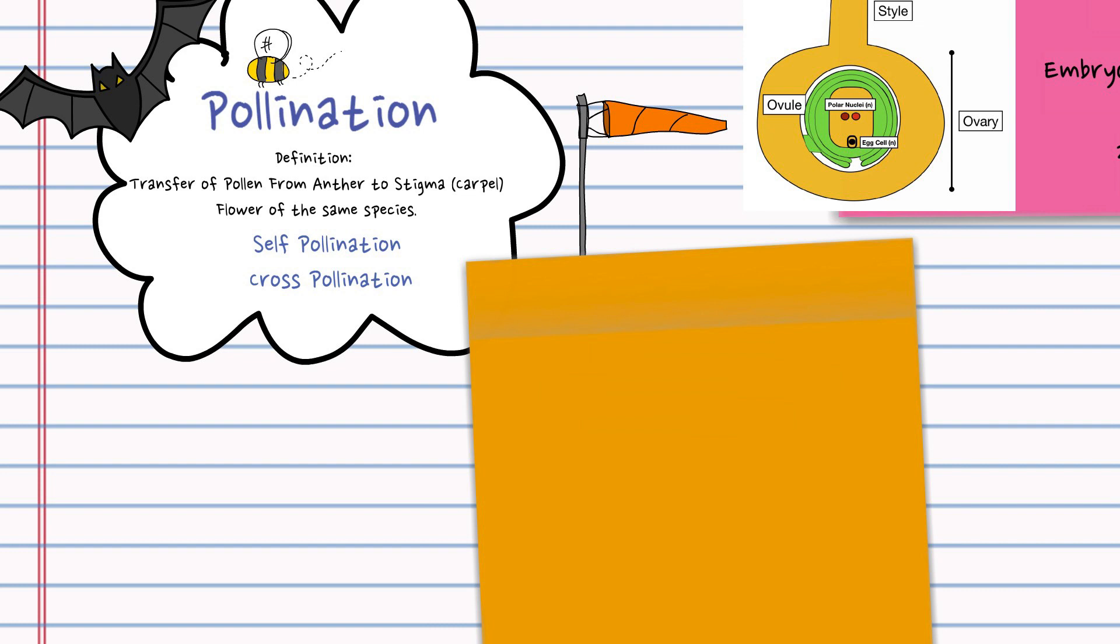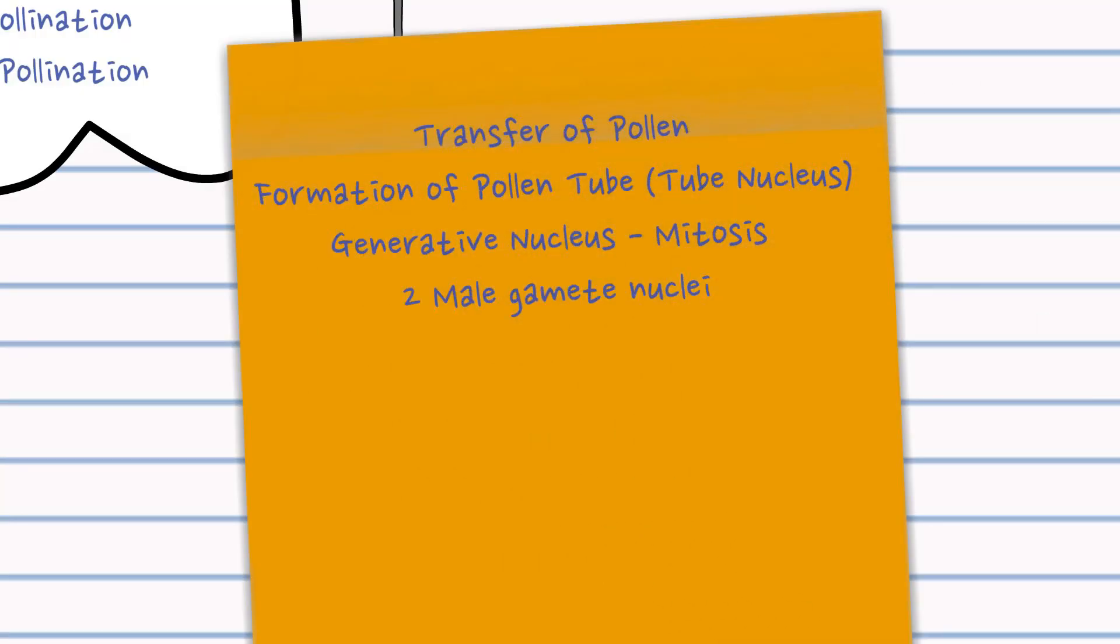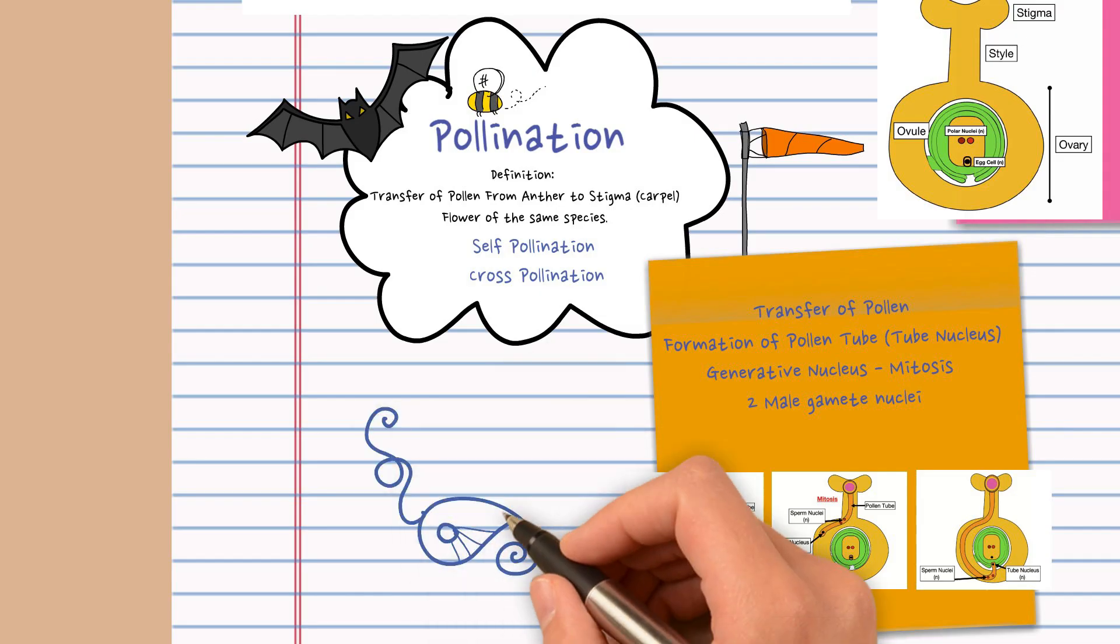So the pollen grain has landed and the pollen tube controlled by the tube nucleus is formed and the generative nucleus undergoes mitosis in this to form the male gametes. These make their way into the embryo sac.